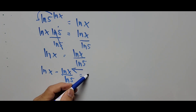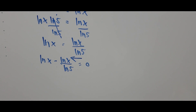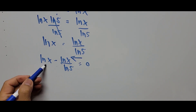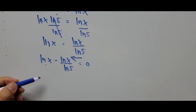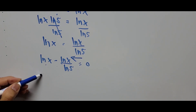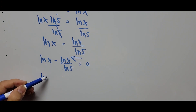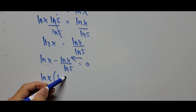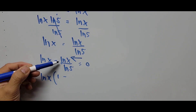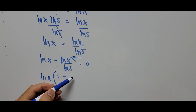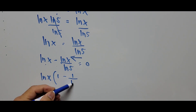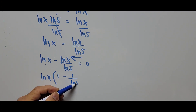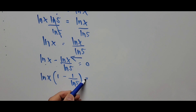Now factoring out natural logarithm of X, we have ln of X times the quantity 1 minus 1 divided by ln of 5 equals 0.